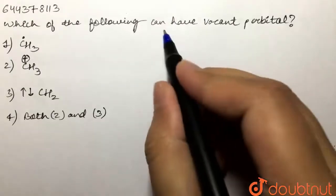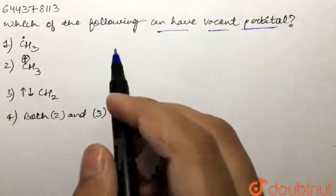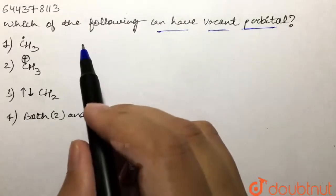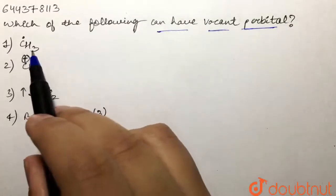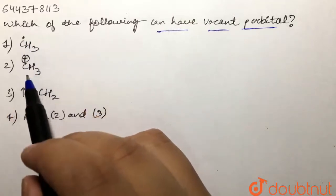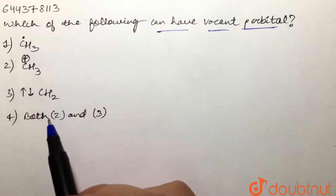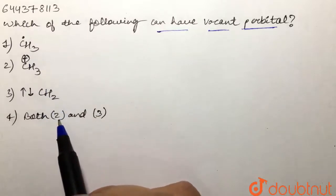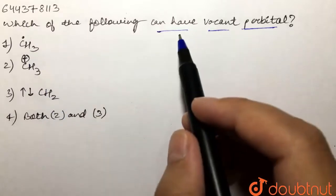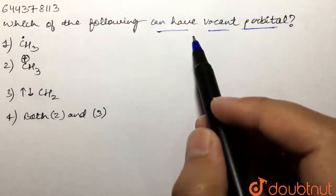We are given these options: CH3 radical with one electron present on carbon, then CH3 positive, and then there is presence of carbene. We are supposed to tell which of the following can have a vacant p orbital.